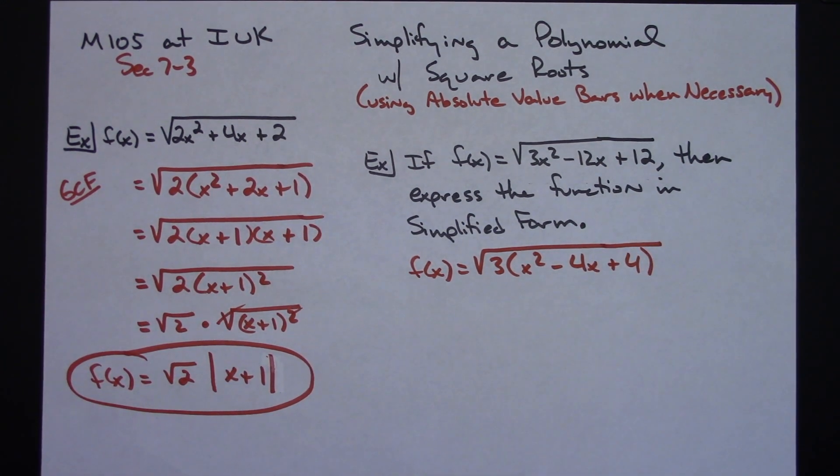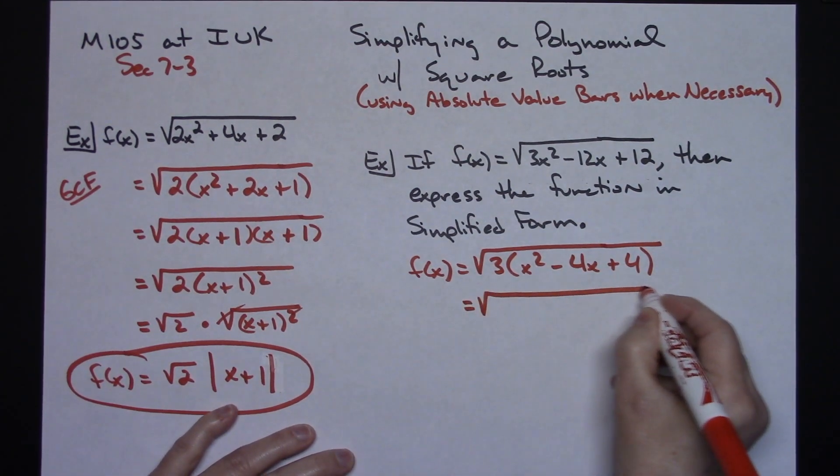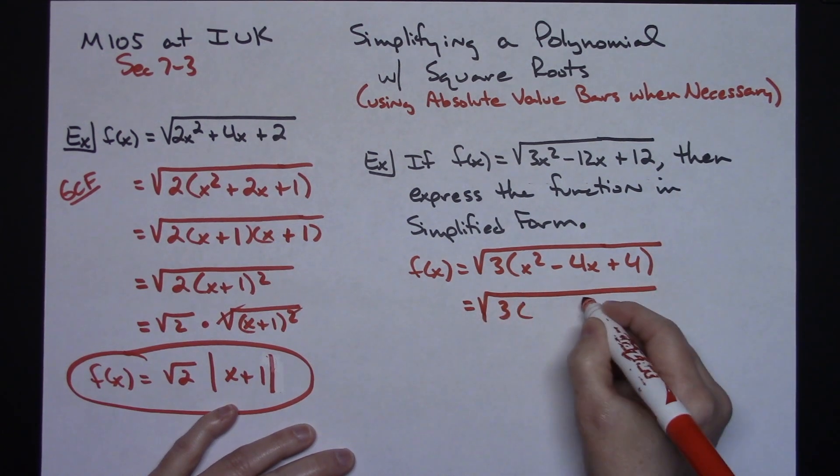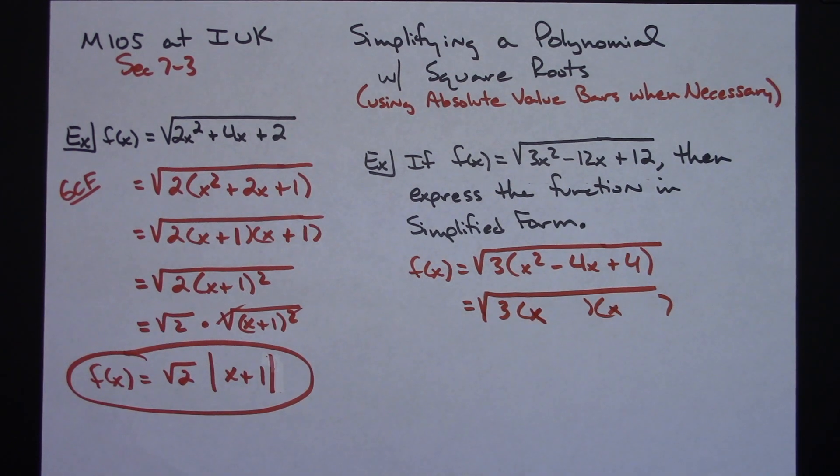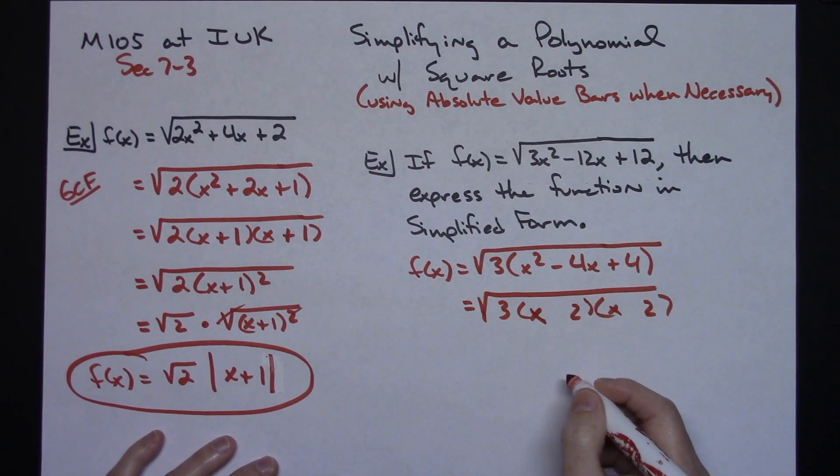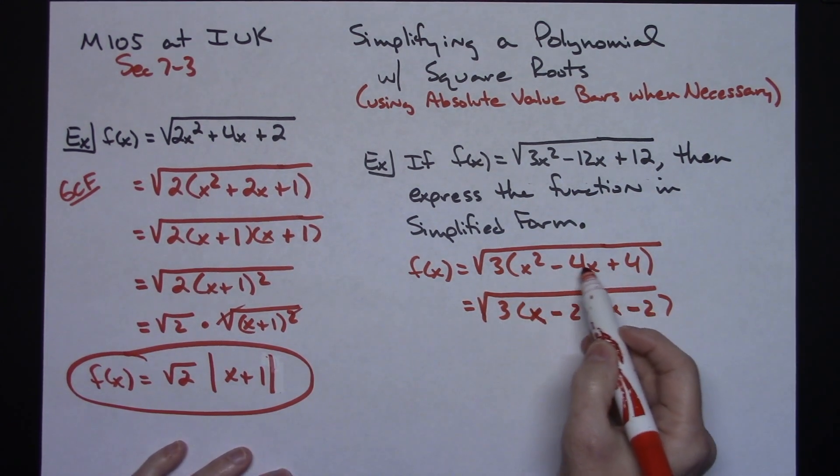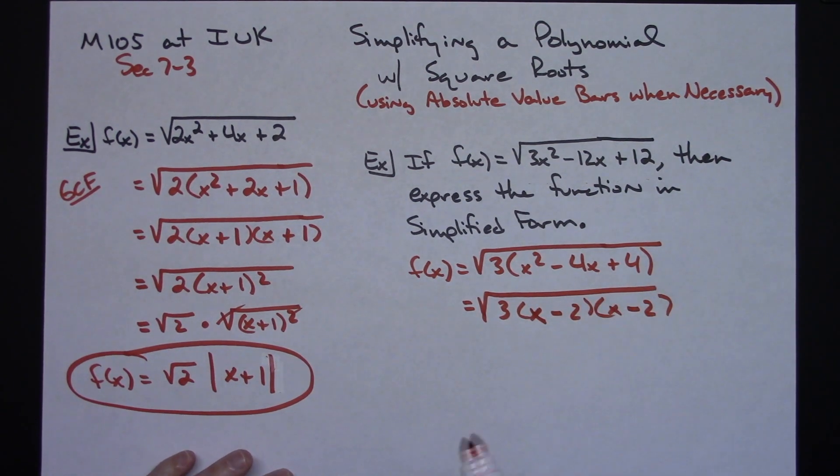You can do guess and check on this. For those of you that are really good at recognizing perfect square trinomials, you could also use the formula. But let's assume you don't. So let's assume you're going to guess and check this. So it's a trinomial. I know I'm going to have an x and an x. Factors of 4, I've either got 1 and 4 or 2 and 2 to choose from. This is going to be a 2 and a 2. I need a negative 4 in the middle, so I'm going to have to have minuses there. So your guess and check definitely works there. But like I said, if you are good at recognizing perfect square trinomials, you should be able to do x minus 2 quantity squared right off the bat.